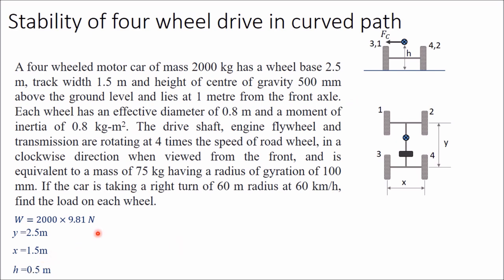The center of gravity lies at 1 meter from the front axle. In this particular case the center of gravity is not lying exactly at the middle of the two axles but is nearer to the front axle, and its distance is given as 1 meter. Since the total distance is 2.5 meter, the remaining distance will be 1.5 meter. So a, the distance from front axle to center of gravity, is 1 meter, and b, from center of gravity to rear axle, is 1.5 meters.